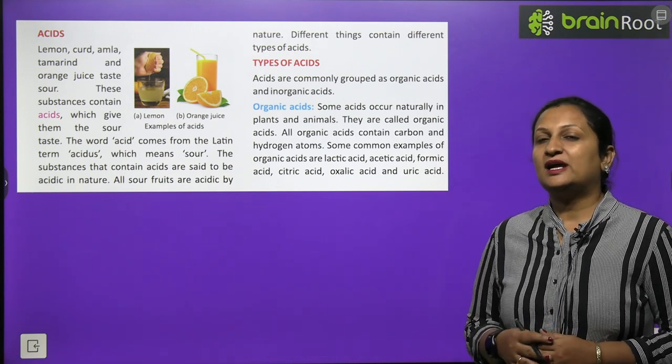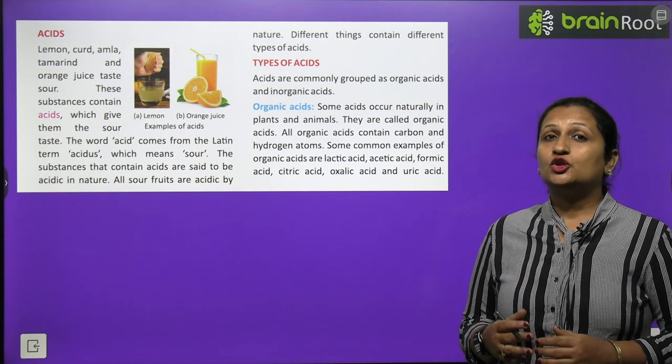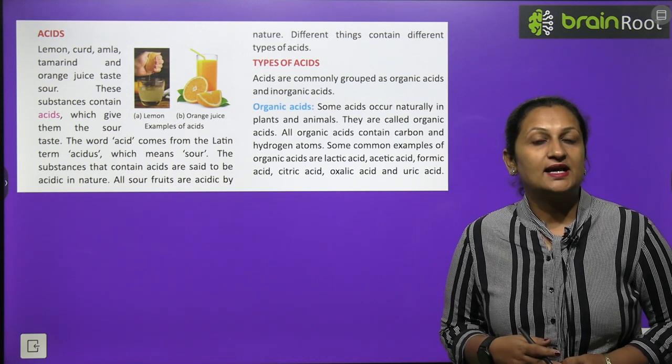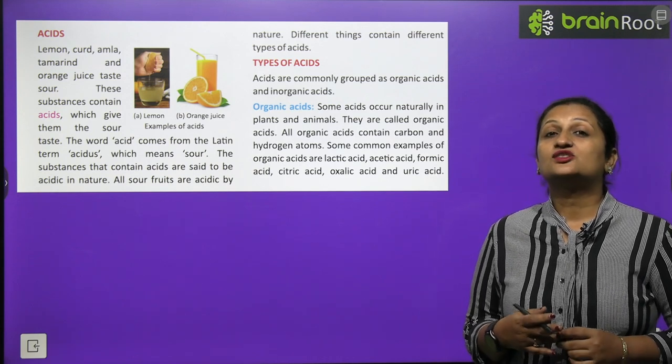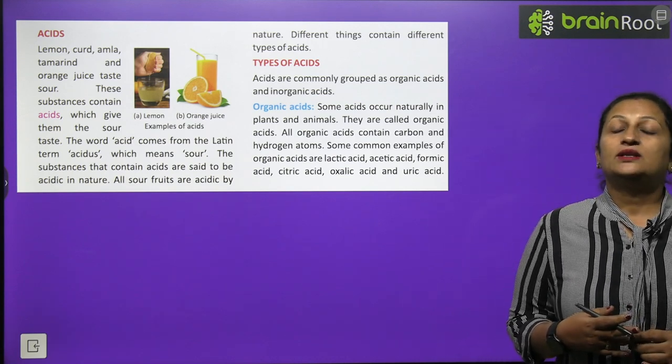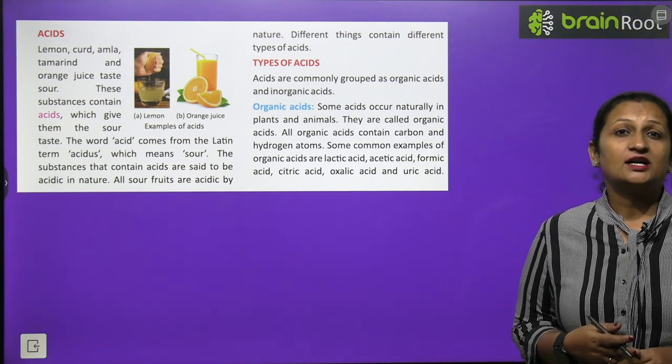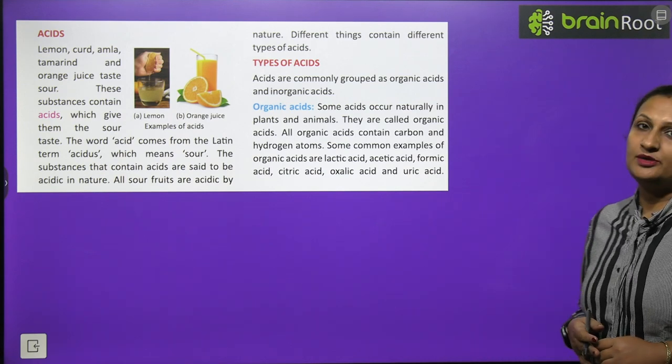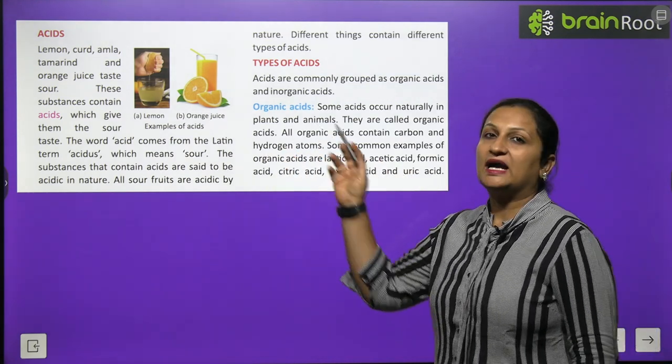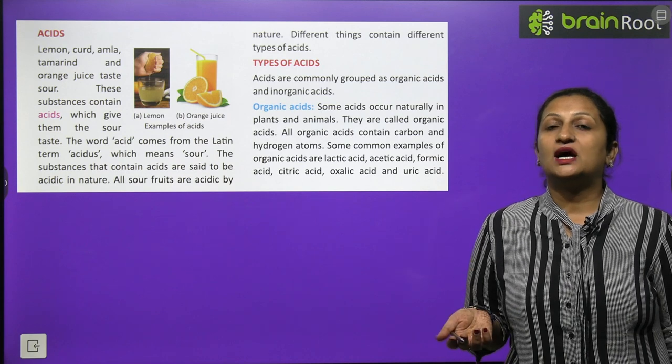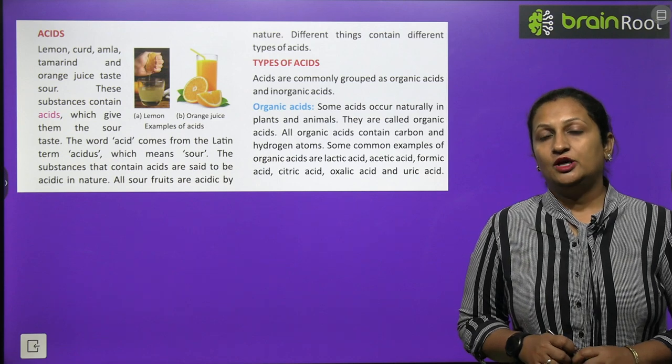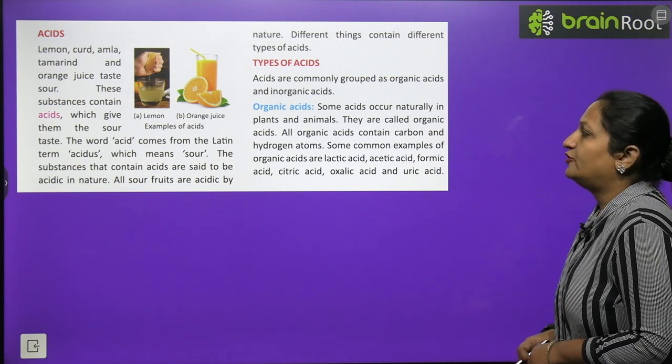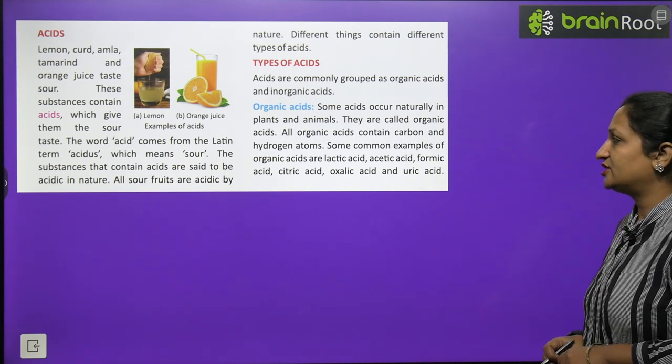These substances contain acids which give them sour taste. The word acid comes from Latin term acidus, which means sour. The substances that contain acids are said to be acidic in nature. All sour fruits are acidic in nature. Different things contain different types of acids. Acids can be commonly grouped as organic acid and inorganic acid. Based on what source we are getting them from, we categorize acids into two categories: organic acids and inorganic acids.